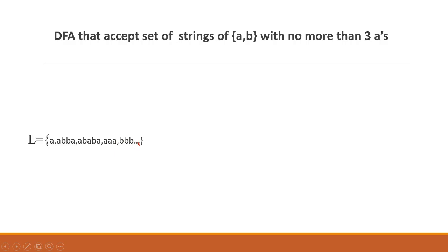So we accept strings with exactly three a's. We come to the concept: no more than three a's means maximum three a's. We are going to accept strings with 0, 1, 2, or 3 a's. That is our acceptance criterion.